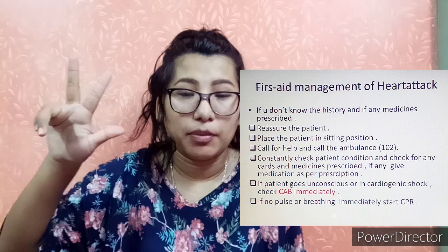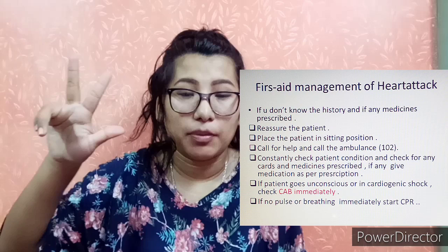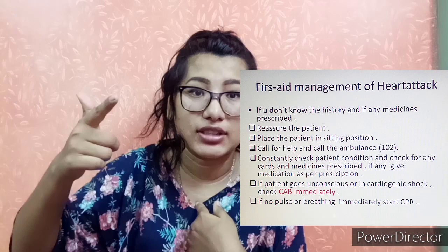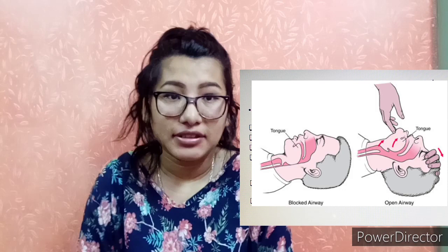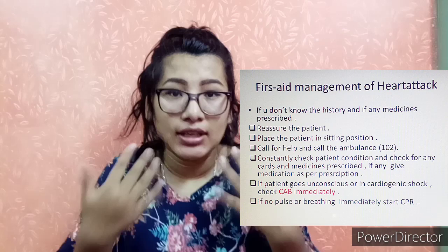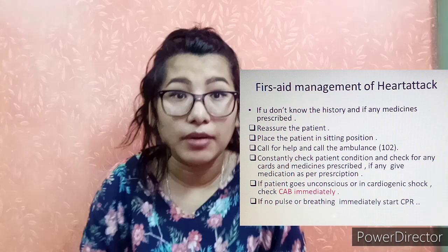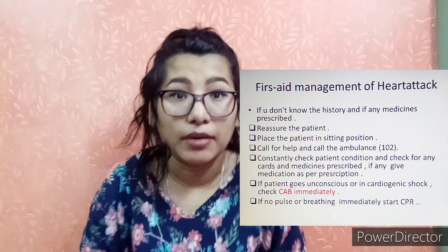If the patient is unconscious, we use the CAB procedure. In C, we check circulation and pulse. In A, we check the airway — perform head-tilt and chin-lift to open the airway. In B, we check breathing.